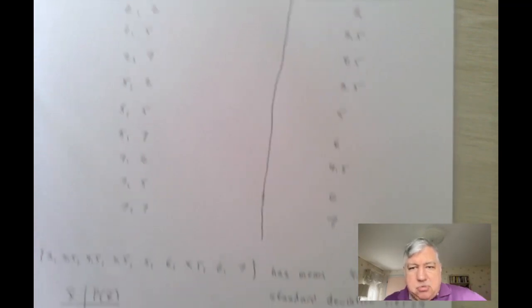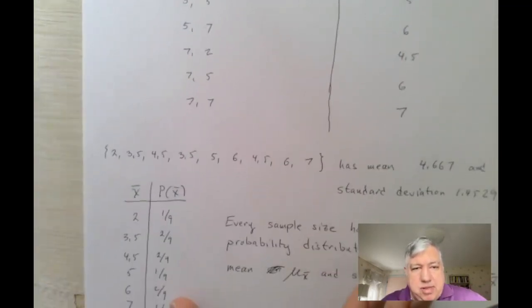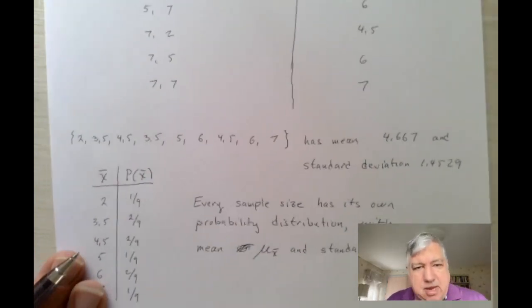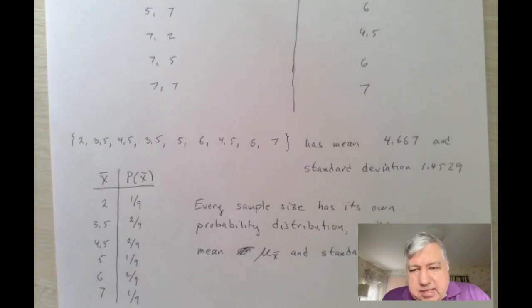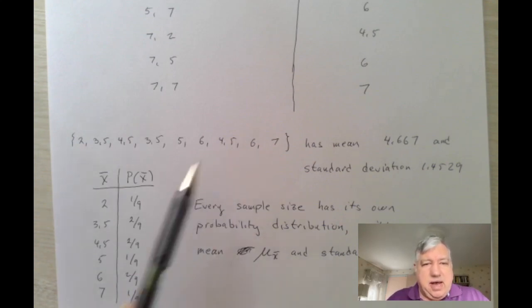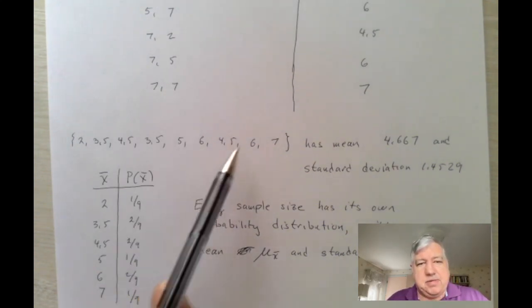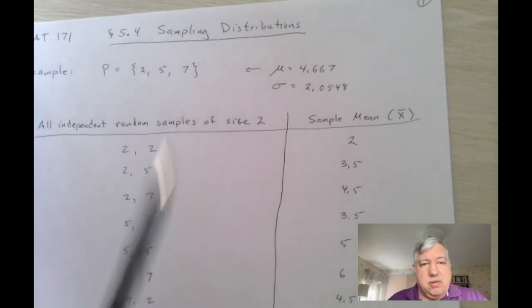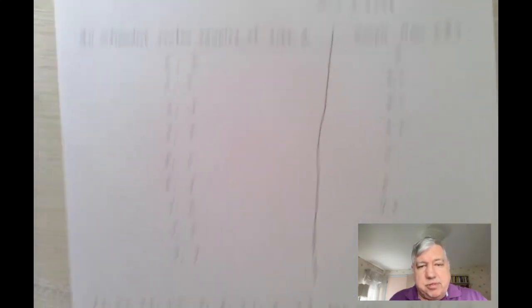So here are all the sample means, and we put those, so we list these, all these put together in its own data set. And when we compute the mean of this new set we see the mean is the same, it's 4.667, but the standard deviation is different. Standard deviation is 1.4529. Now you'll notice that it's a little smaller. And it kind of makes sense, they're slightly not spread out as obviously they seem to be spread out a little bit more in our original population.